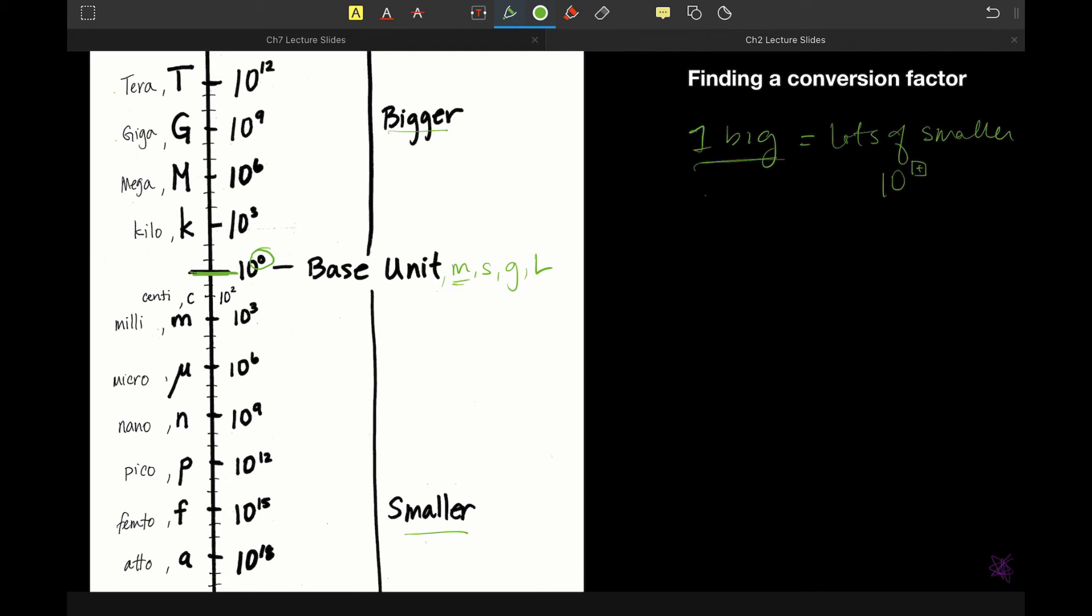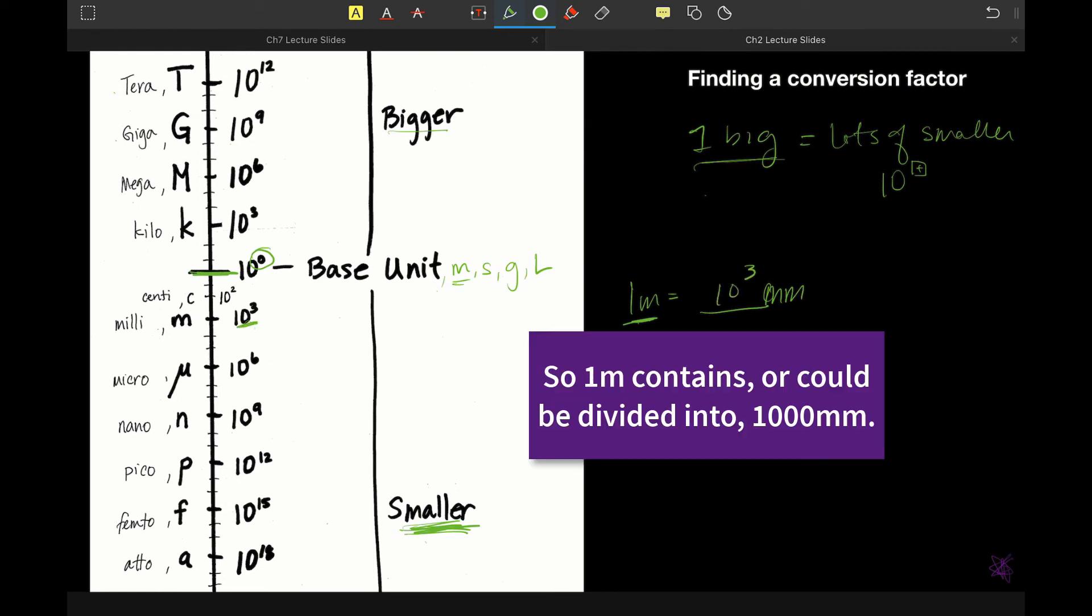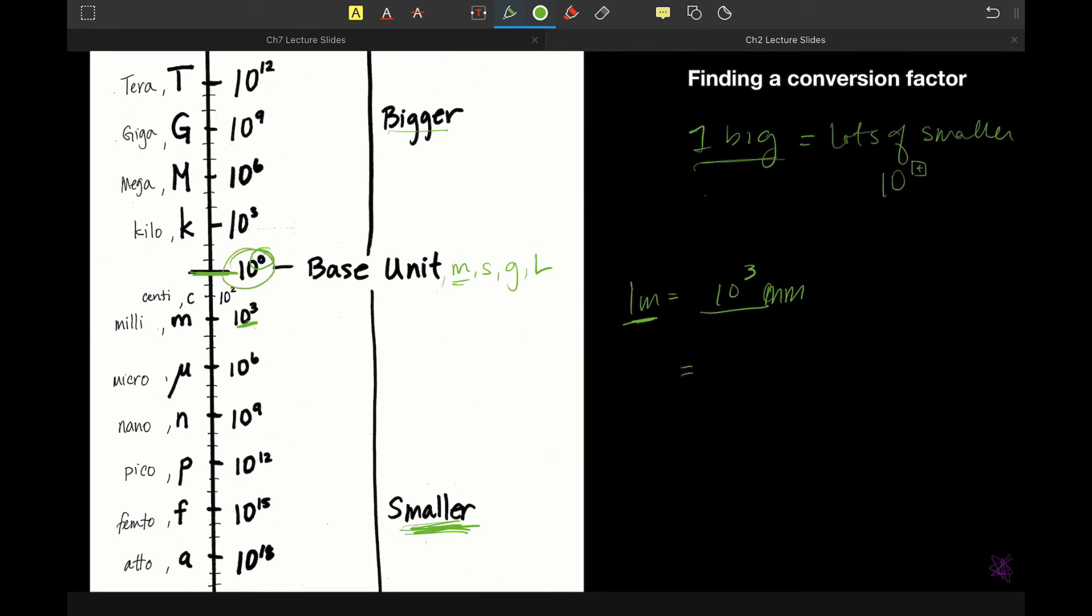So let's practice that. So let's say we're talking about meters here. So one meter is equal to, let's say we want to come up with some millimeters. Millimeters are smaller. So one goes with the bigger unit. Since millimeters are smaller, but it's 10 to the third, we would say 10 to the third millimeters. There are 1000 millimeters equal to one meter.